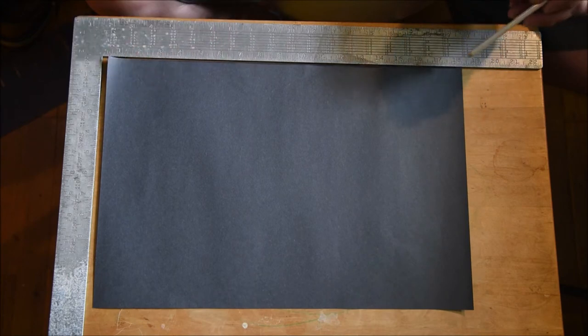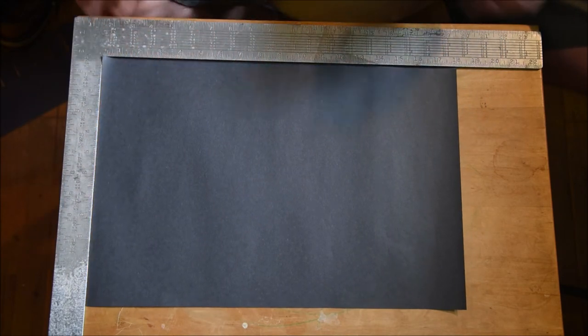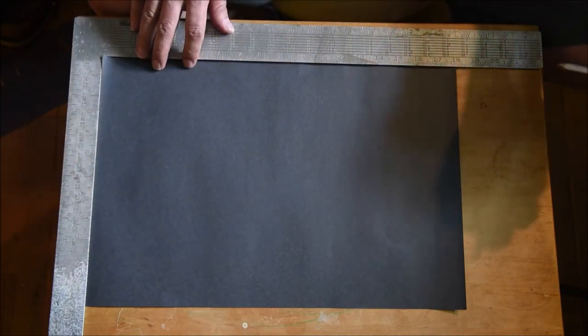Okay, I've got my construction paper here, and this piece of paper is 18 inches by 12 inches. First thing I want to do is divide it in half this way.